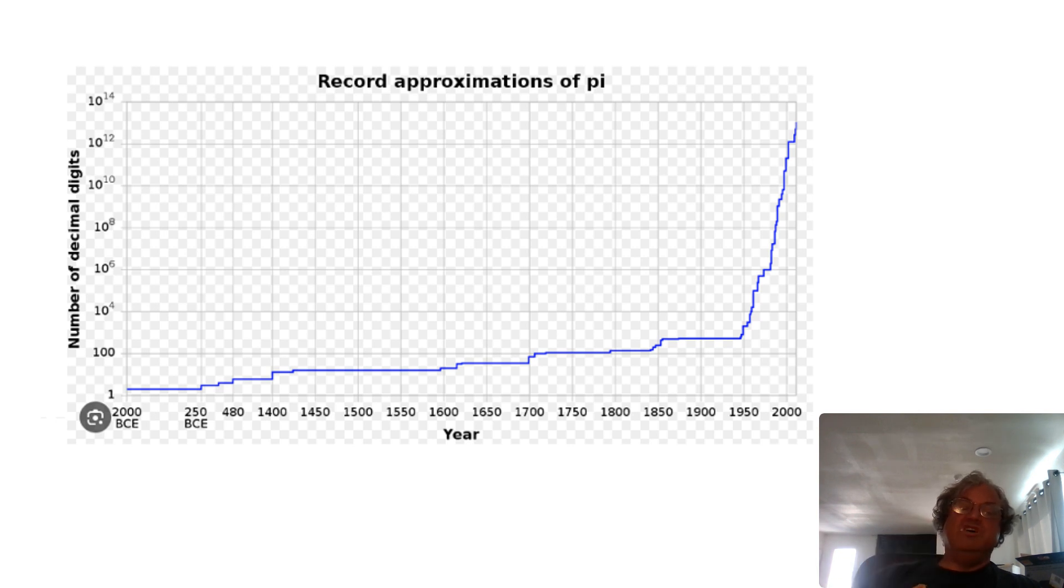But once computers were invented, the number just skyrocketed, because you could just plug in the formulas to the computers. We already had very fast converging formulas. We just couldn't do them by hand in a reasonable amount of time. But as computers became faster and faster, we've been able to compute more and more digits of pi.